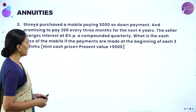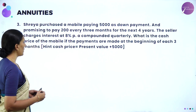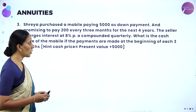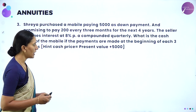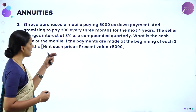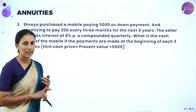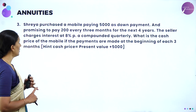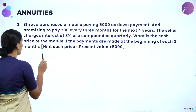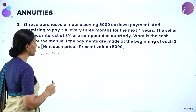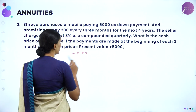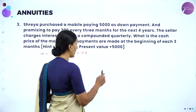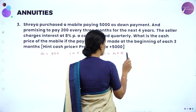Problem 3: Shreya purchased a mobile paying 5000 as down payment and promising to pay 200 every three months for the next four years. The seller charges interest at 8% per annum compounded quarterly. What is the cash price of the mobile if the payments are made at the beginning of each 3 months? Since the interest rate is compounded quarterly, we first need to calculate the effective rate of interest. Here A is 200, I is 0.08. Since it is compounded quarterly (4 times a year), over 4 years the number of installments is 16.